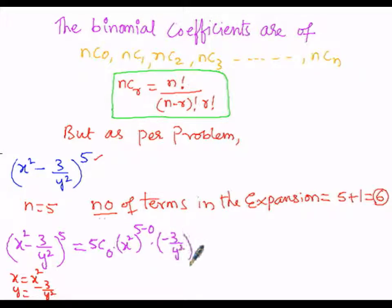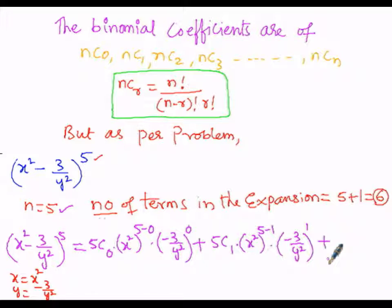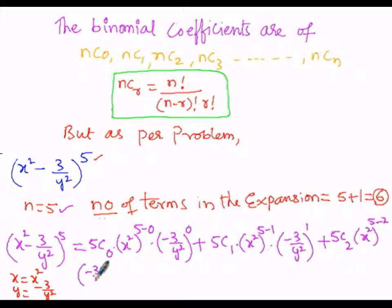The second term is 5C1 times (x²)^(5−1) times (−3/y²)^1. The third term is 5C2 times (x²)^(5−2) times (−3/y²)^2.